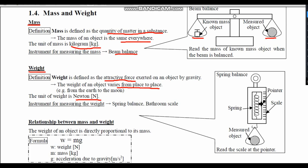The instrument used to measure weight is the spring balance, and we also use the bathroom scale to get the weight of an object. The spring balance will always have a spring — how that spring is stretched indicates the weight of the object. The pointer on the spring balance tells us the weight of that object.